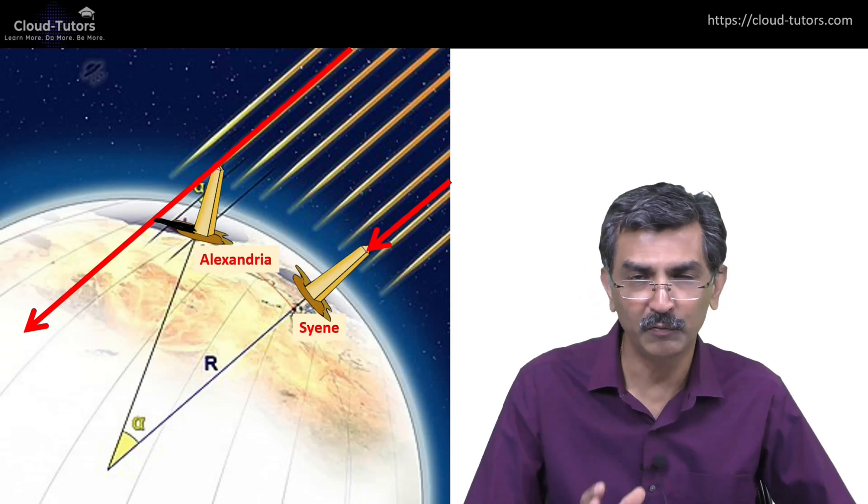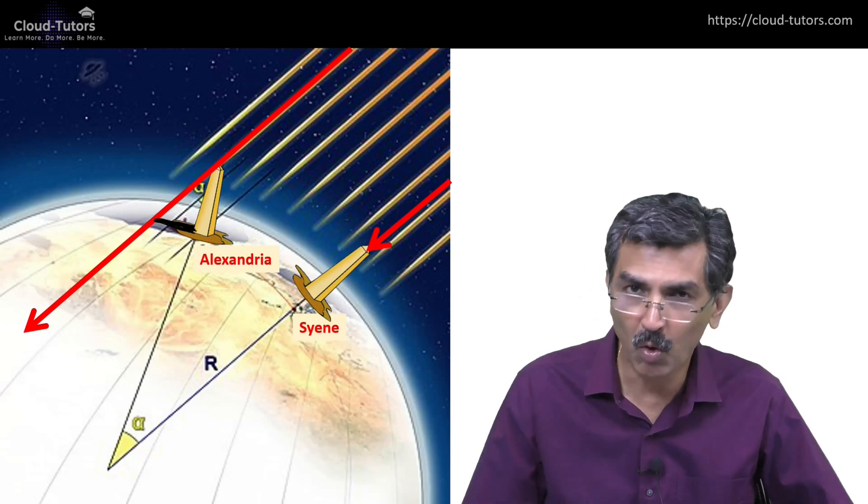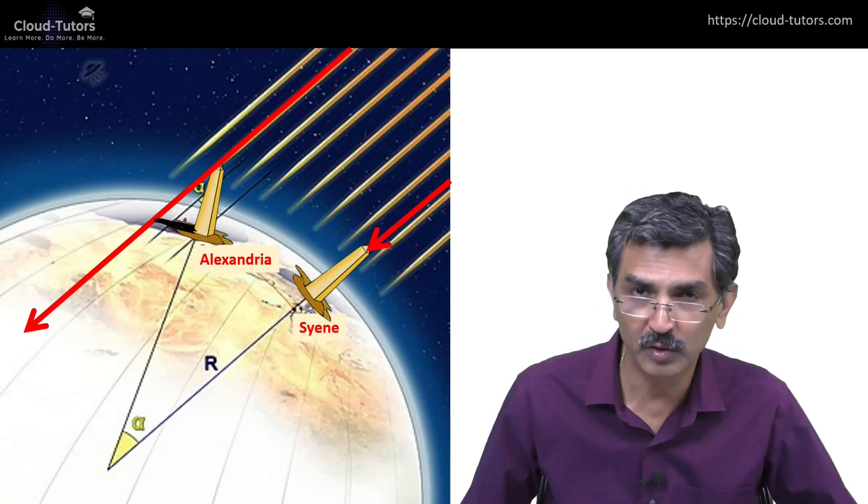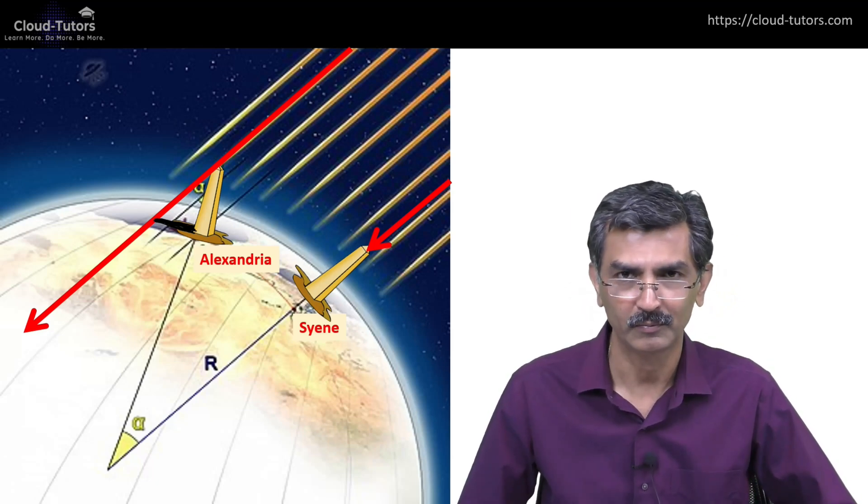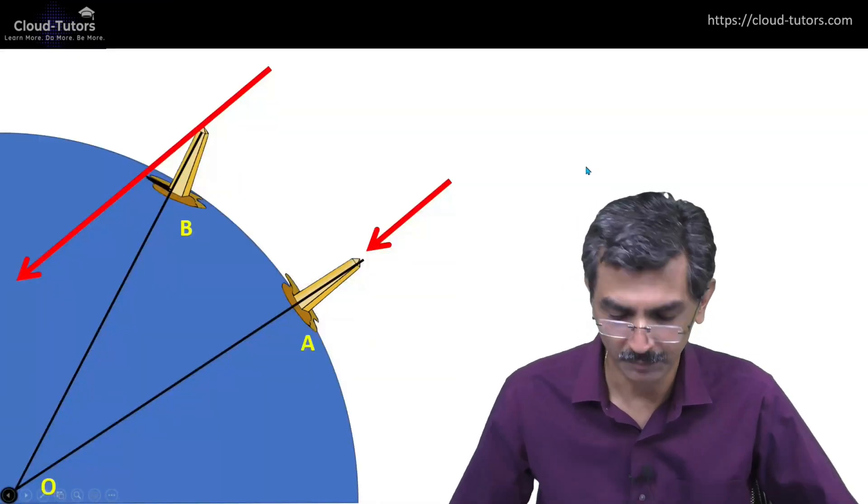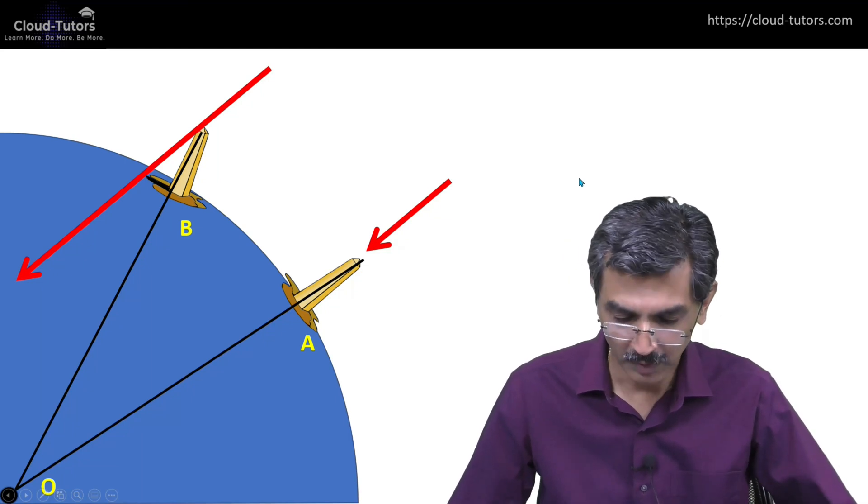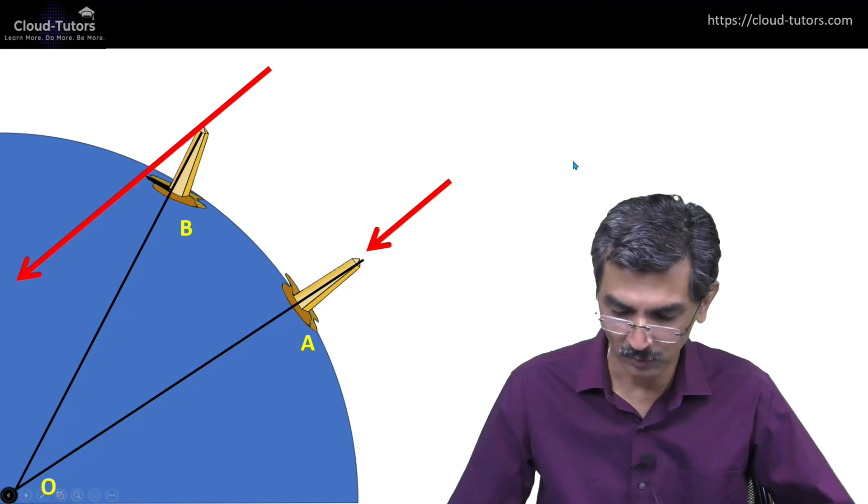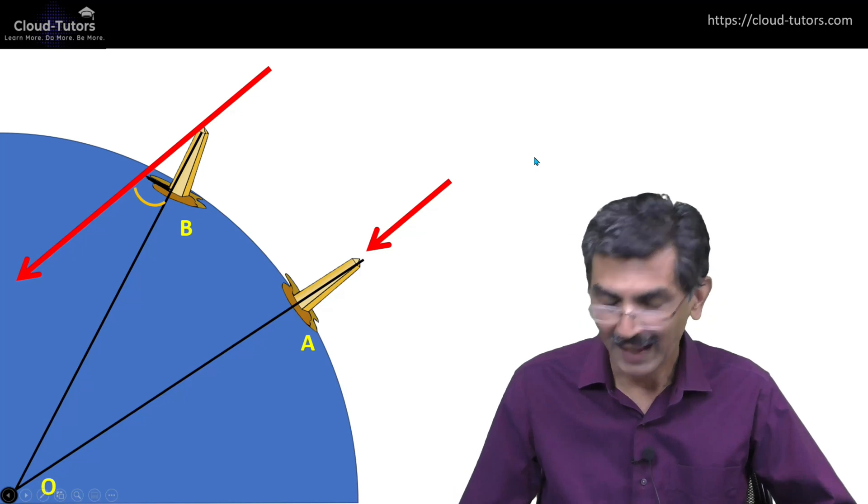This was the experiment he conducted. The simplicity of it is amazing. The distance between Syene and Alexandria we now express as 800 kilometers, but kilometer is a modern unit. Eratosthenes must have expressed the distance using a different unit. In this experiment, what was the measurement he made? Of course in Syene there was no shadow, but in Alexandria he measured the length of the shadow and was able therefore to calculate this angle.